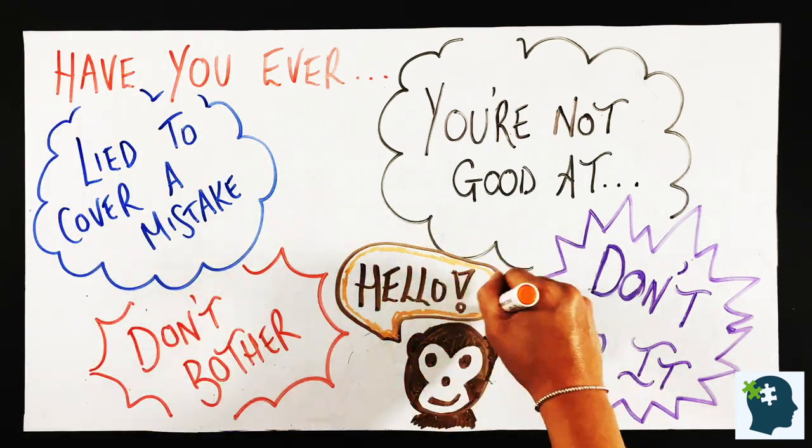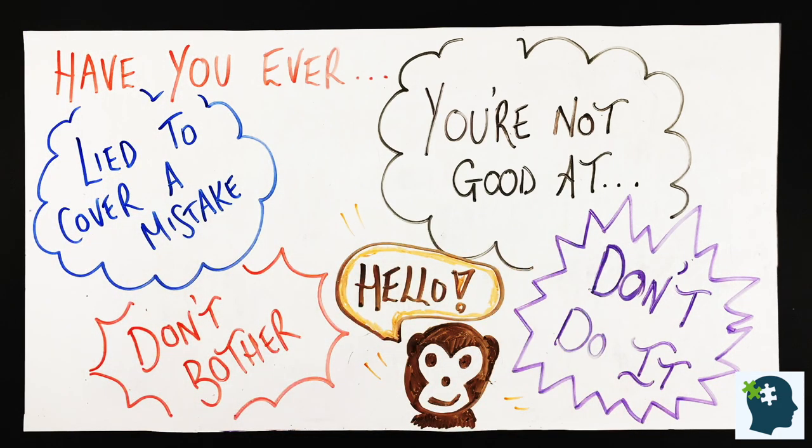Much of our chimp chatter is trying to protect our reputation. Again, back in the early human years, our chance of survival was increased if we were part of a social group. If we were kicked out of the group, there was less chance that we'd survive alone. It's reassuring to know these emotional and reactive thoughts are normal. And we all have them.